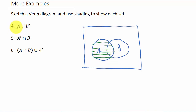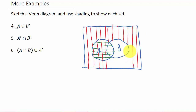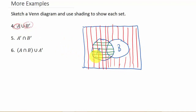There's A shaded in. Now let's shade in B complement with vertical lines. Remember, B complement is everything outside of B. Now we need the union of these two sets. The union is everything in both sets combined into one set, so everything that has a line gets shaded.